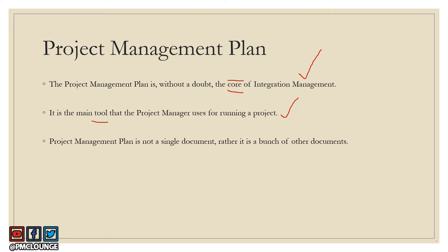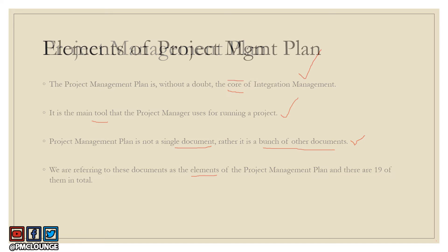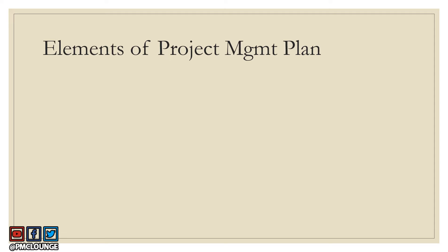The project management plan is not a single document. It is actually a bunch of several other documents. These several other documents are referred to as the elements of the project management plan. There are 19 elements, or 19 sub-documents, that combine to make up the project management plan. Let's go over all 19.